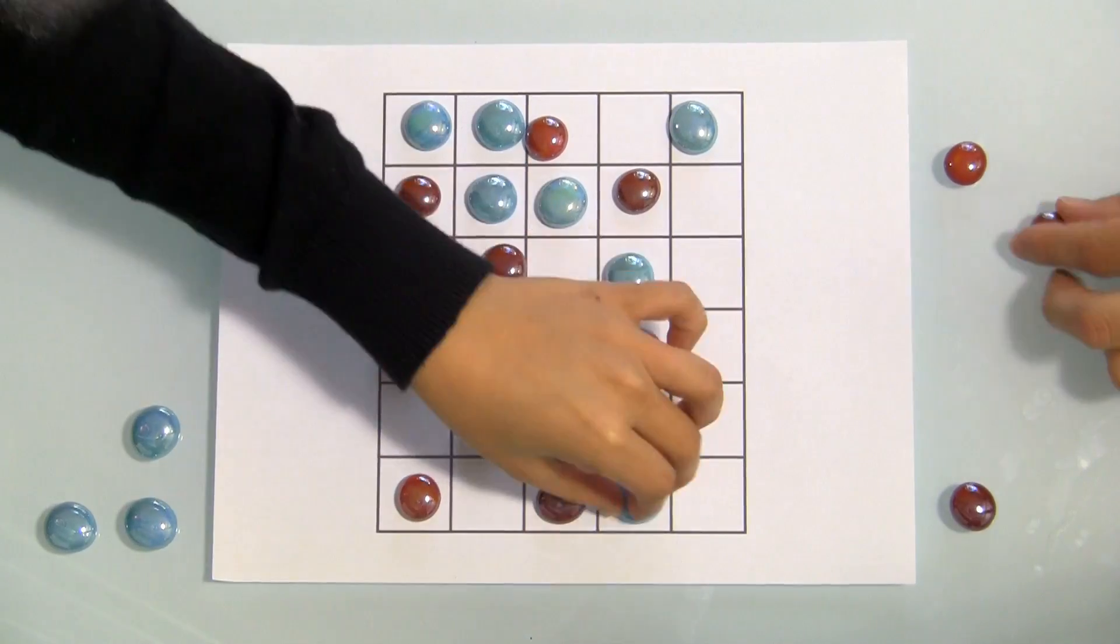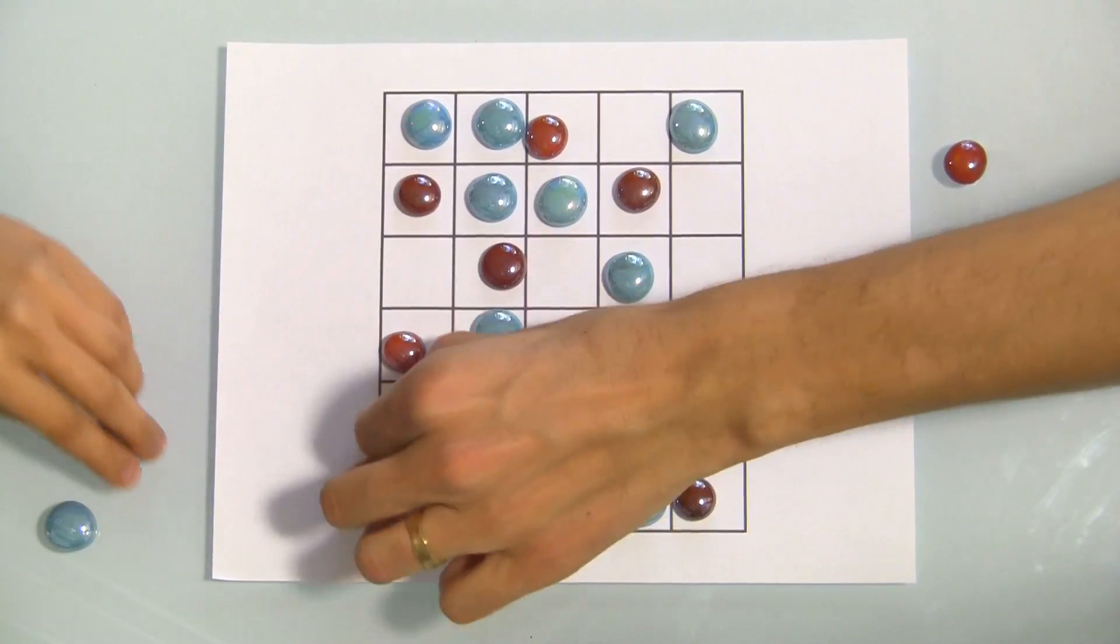You also can't capture an opponent's piece during the placement phase, even if you've made a row of three.